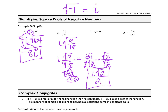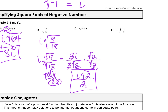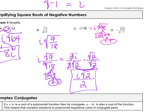For part c, first bring out the negative as i so we can simplify the square root of positive 98. Using a factor tree: 98 is not perfect, so 2 times 49, then 7 times 7. Pairing the 7s because it's a square root, the pair comes out and the 2 stays inside, giving us 7i square root of 2. Don't forget your i.